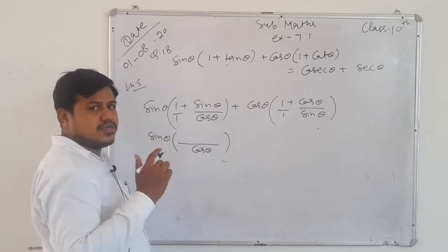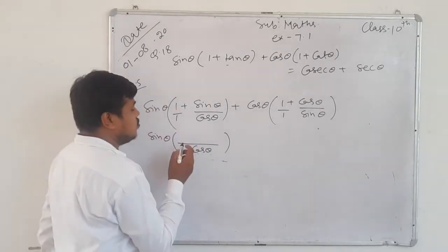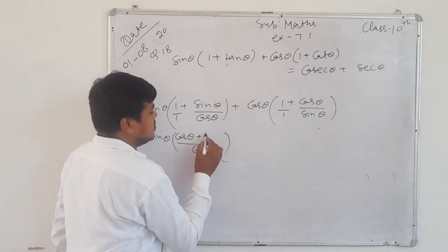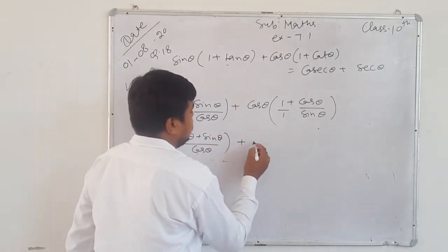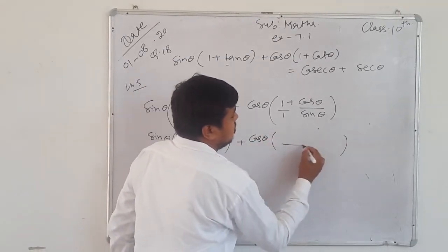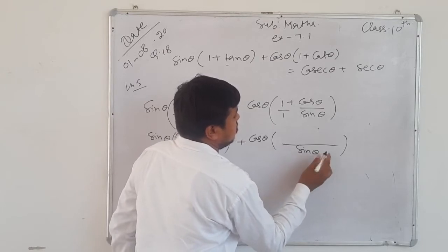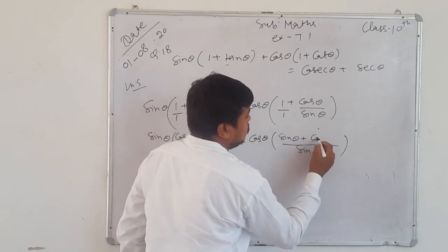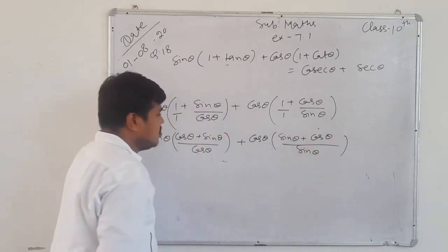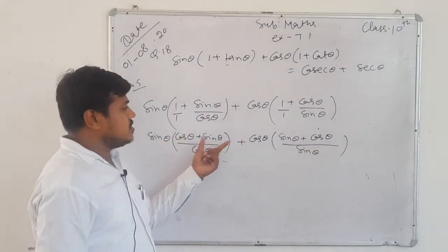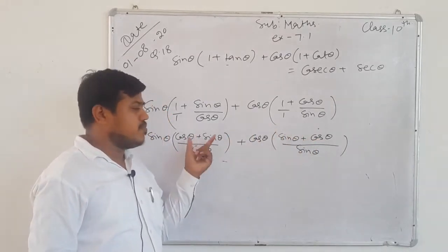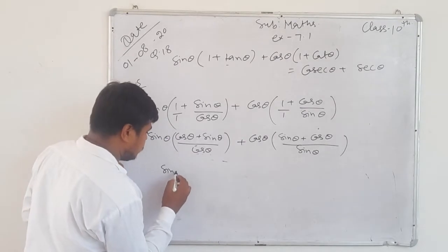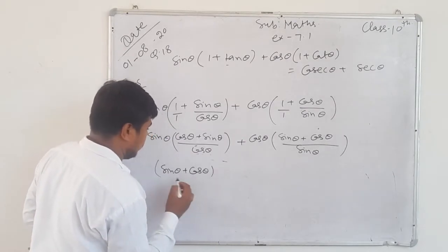For the first bracket: LCM is cos θ. Cos θ divided by 1 gives cos θ; multiply numerator — cos by cos gives cos²θ... After taking LCM: numerator becomes (cos θ + sin θ) for the first term, and (sin θ + cos θ) for the second term. Now sin θ + cos θ is common in both — take (sin θ + cos θ) as common.